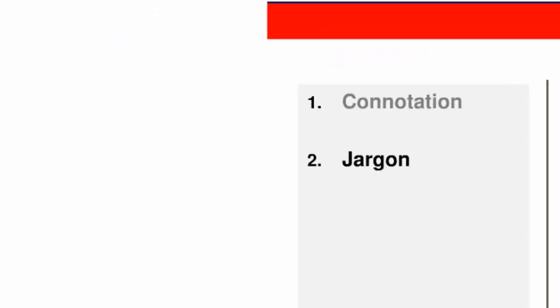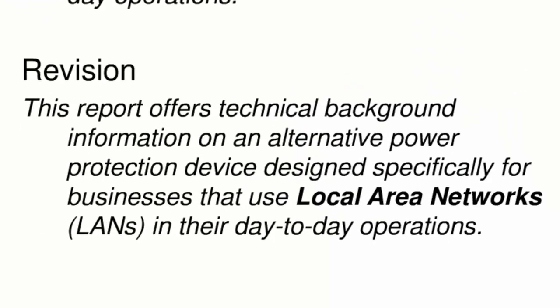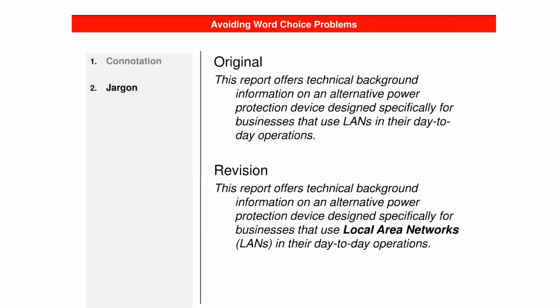The second source of word choice problems is jargon. The readers of the recommendation report are non-experts about the technology — that's why they need the report. Consider the vocabulary in the original sentence: do you recognize any terms a non-expert might be unfamiliar with? For example, LAN is an acronym, which makes it jargon and might not be understood by all readers. The revised version is more effective because it appropriately spells out the meaning of the acronym. From now on in the report, the writer has increased the reader's expertise so the acronym can be used with reasonable expectation that readers will understand it. Correctly identifying the audience's level of knowledge is the key to avoiding problems with jargon.